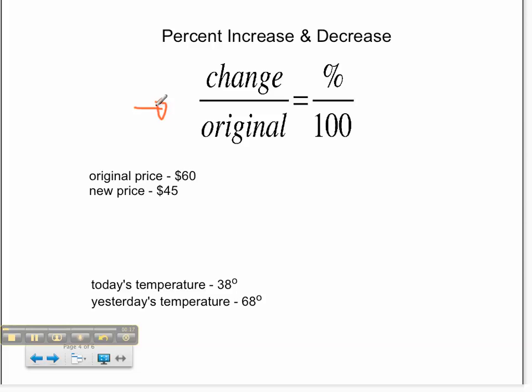In our first example, we're looking at an original price of $60 and perhaps a sales price of $45. I'm going to set up my proportion by finding the change in price. In order to find the change in price, I'm going to find the difference of the two prices.